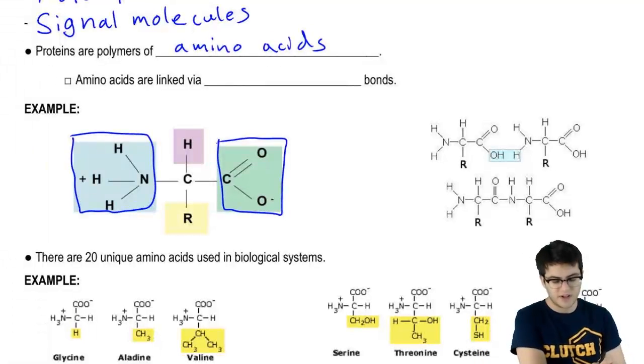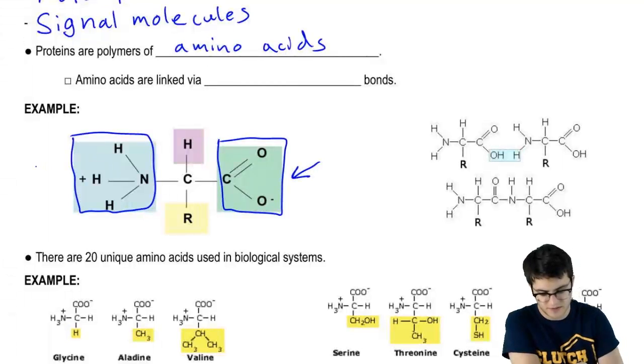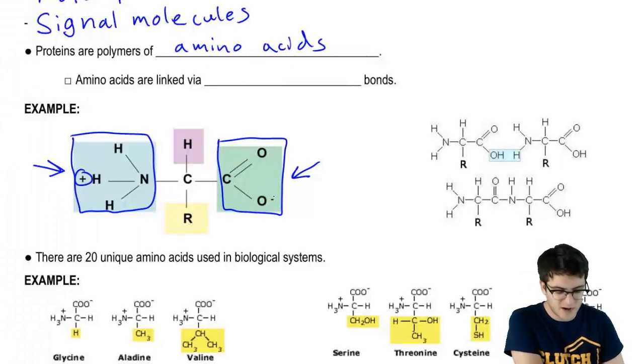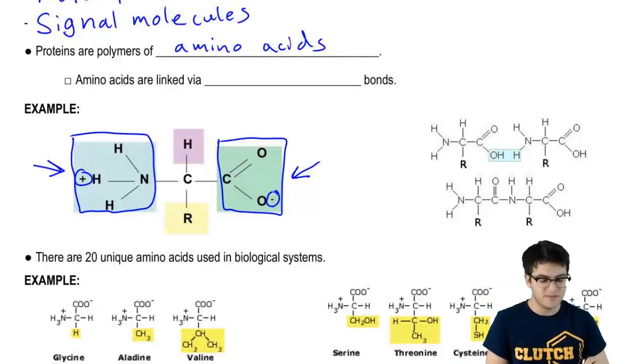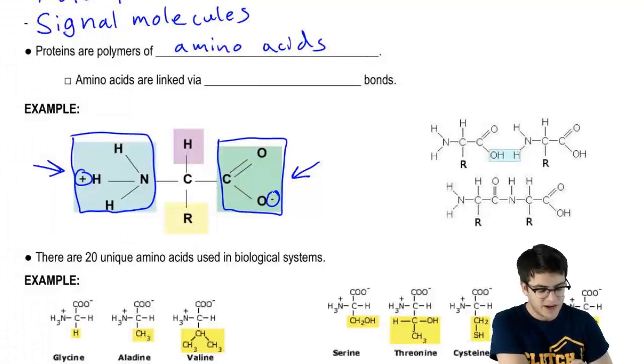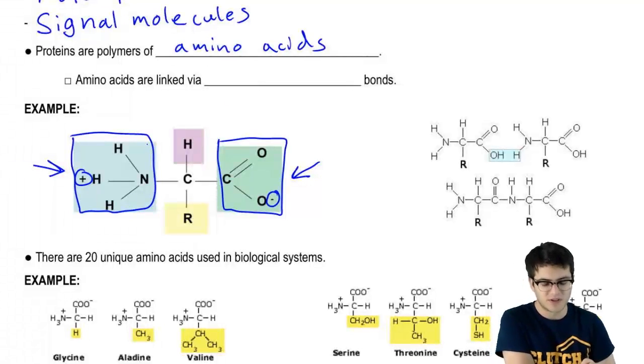Now, you might notice that these two groups are charged. The amine group has a positive charge and the carboxylic acid group has a negative charge. In normal biological systems, where water predominates, amino acids tend to take this charged form. Now, bear in mind that the molecule as a whole is neutral because the positive charge and the negative charge cancel each other out.